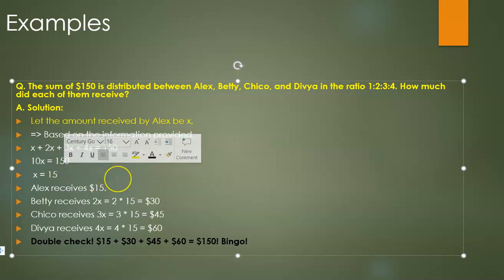So here is our equation: x + 2x + 3x + 4x = 150, and that gives us the value of x, which is 15. That's what Alex receives. Betty receives 2x, which is $30, Chico receives 3x which is $45, and Divya receives 4x which is $60. Do they add up to 150? Yes, they do.